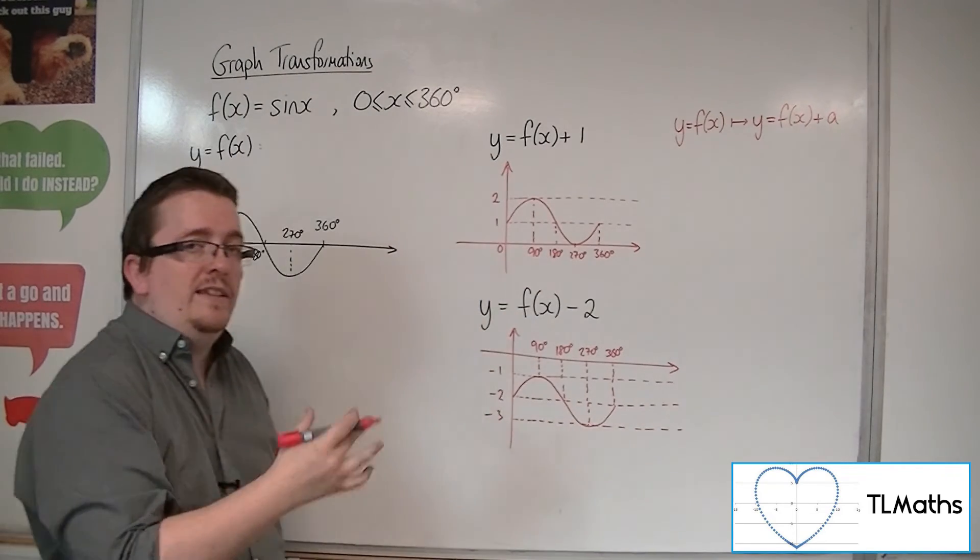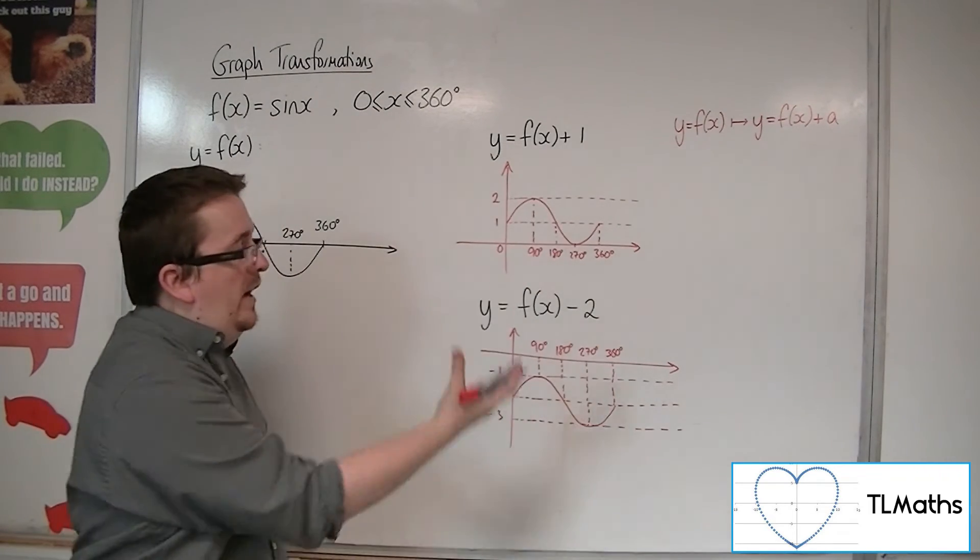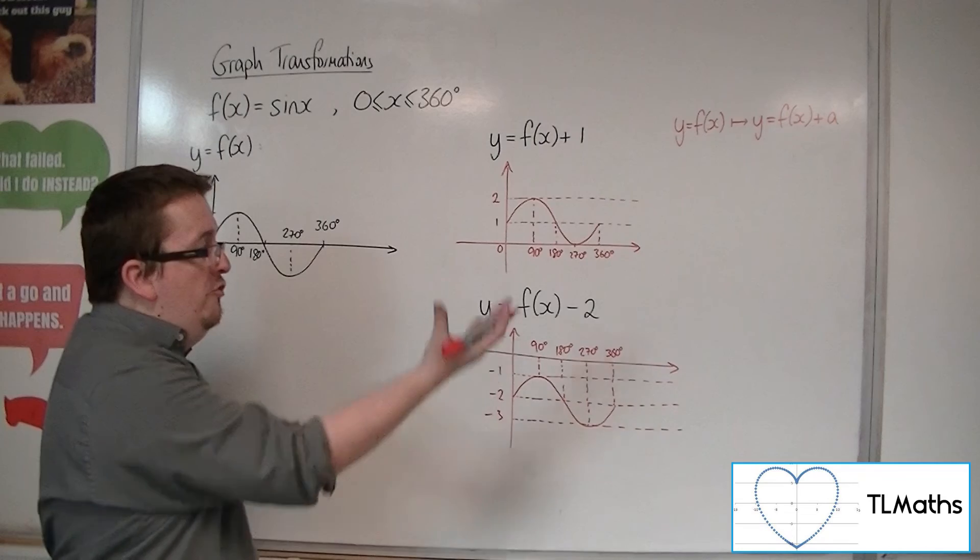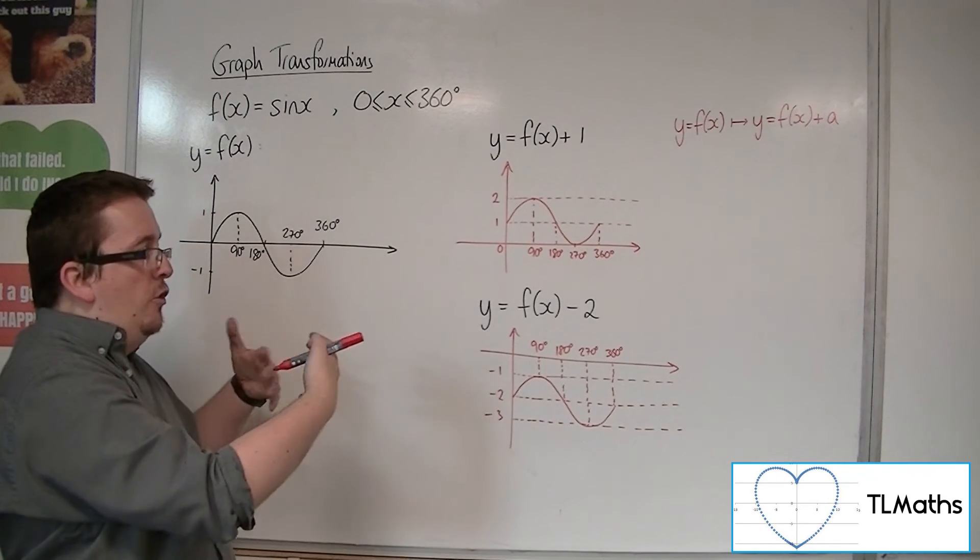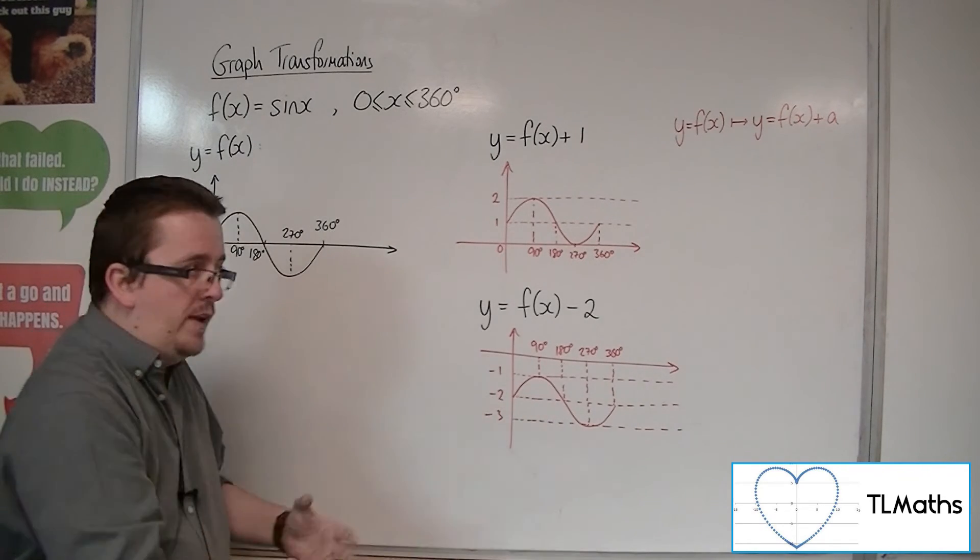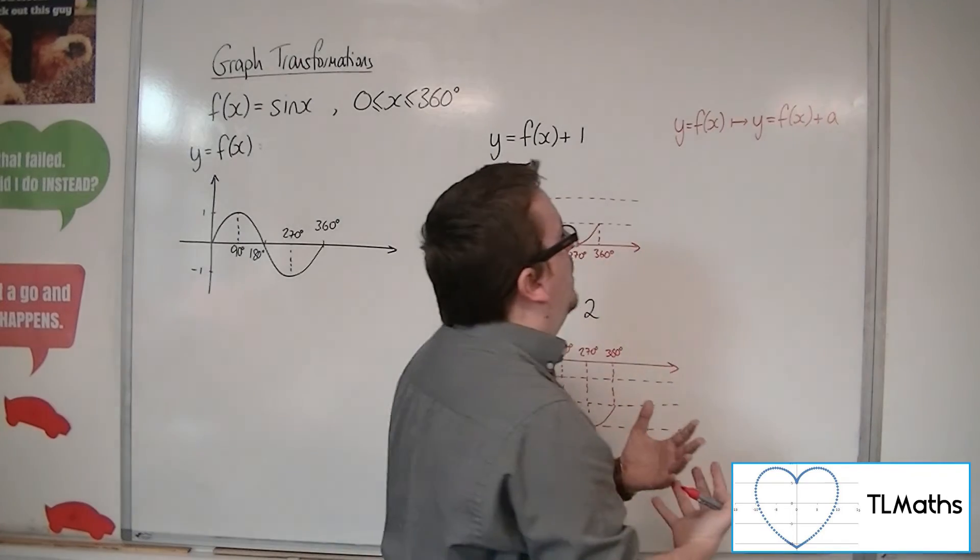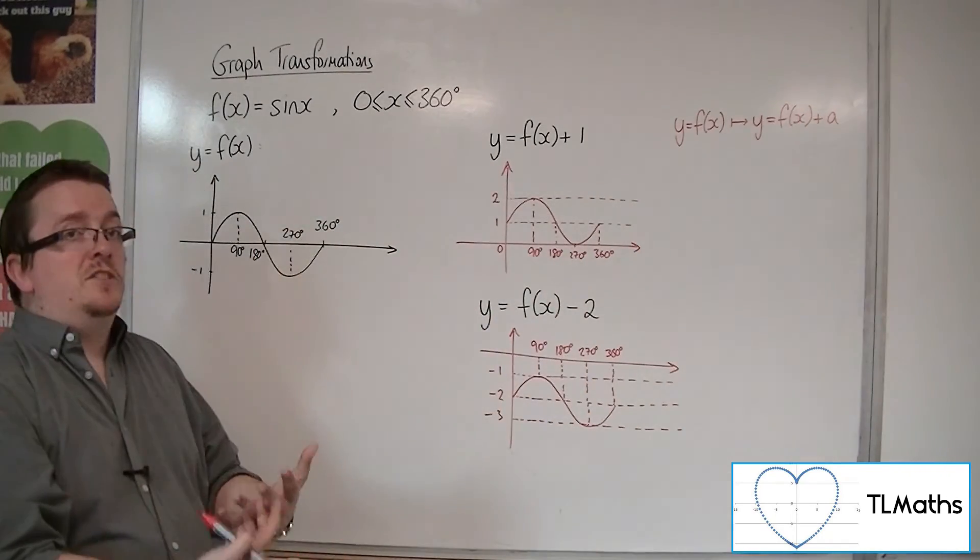Then what this is doing is it's moving the graph up and down. And we call a movement of the graph where it's not changing shape in any way, it's just moving around the coordinate axis, we refer to that as a translation.